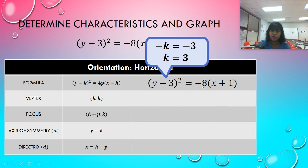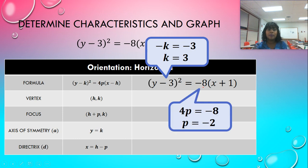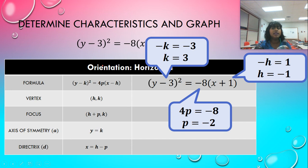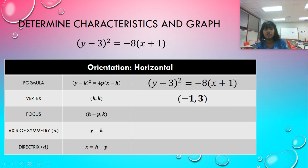Make sure you're paying attention to the format of your standard form. Your P value can be calculated. A lot of people might make a mistake and say P is negative 8. But remember, it was 4 times P. So, you have to solve it back, basically divide by 4. And so, our P value is going to be negative 2. And our H value isn't going to be positive 1. It's going to be negative 1. So, I fill out some information since I know my H, my K, and my P.